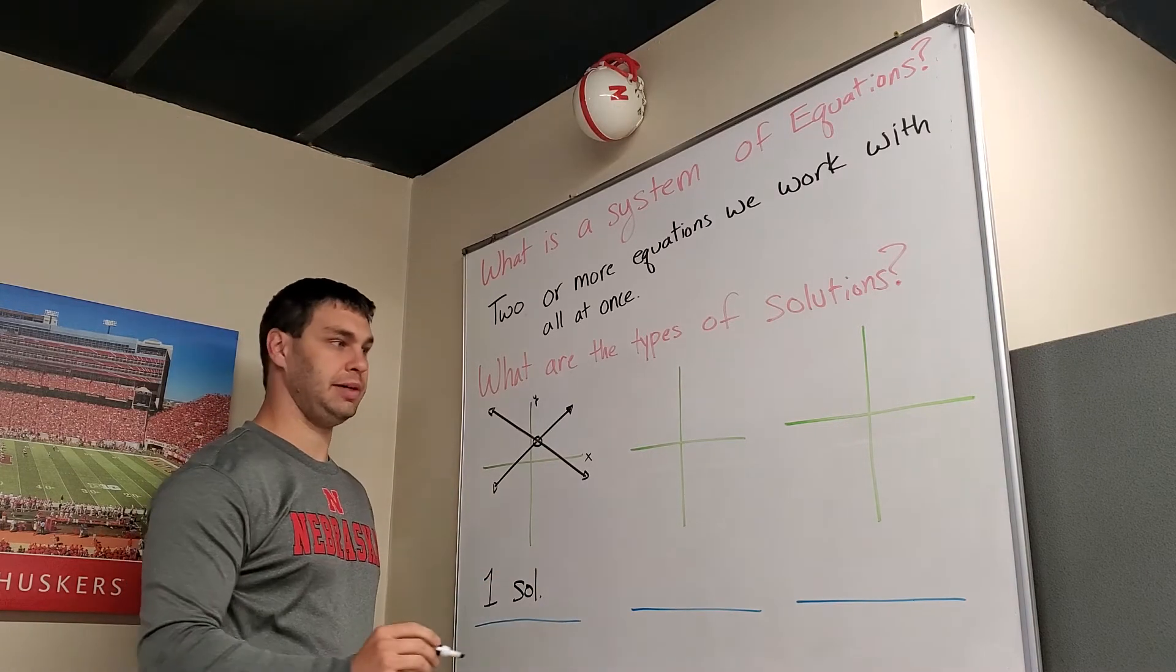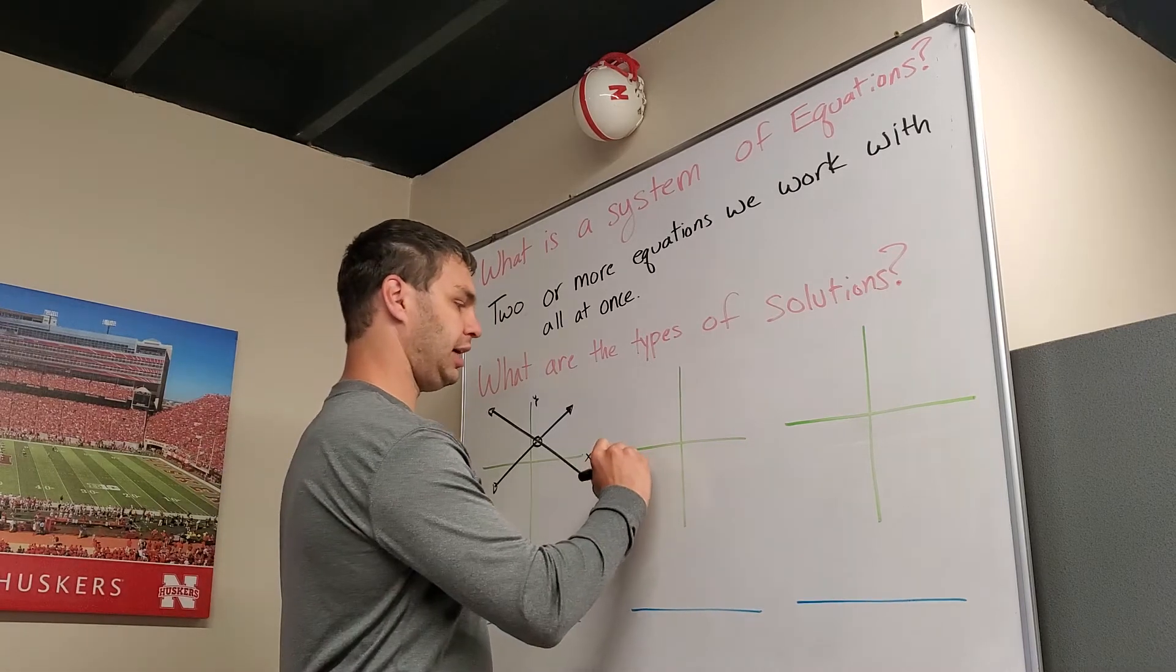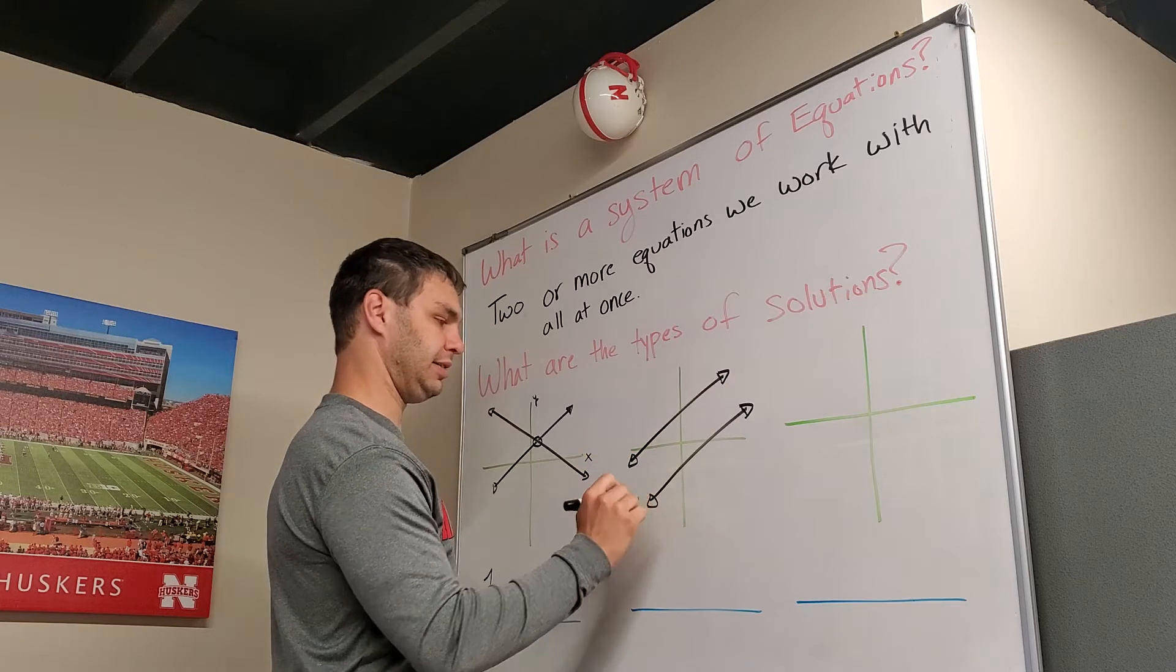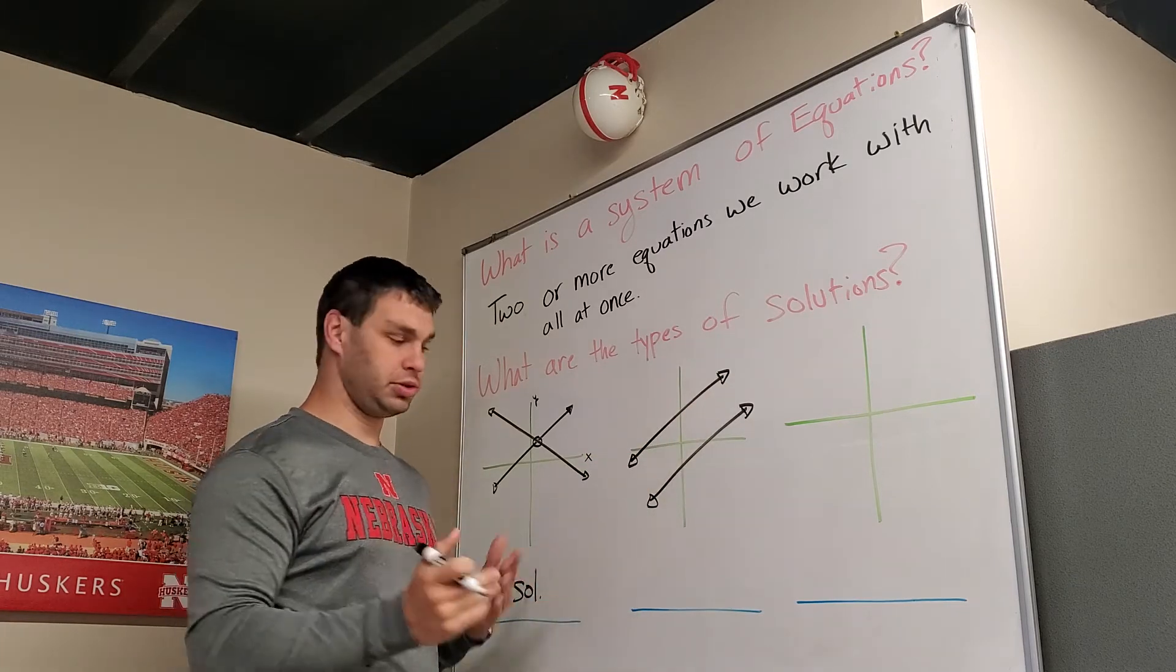Another type is if they do not cross. Those are parallel lines. And parallel lines, since they don't cross, are going to have no solution.